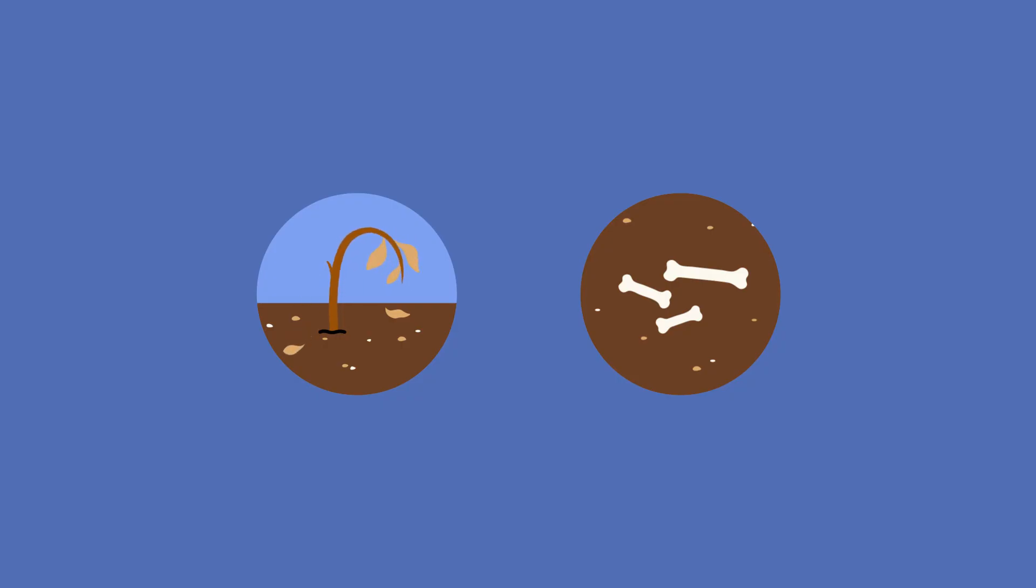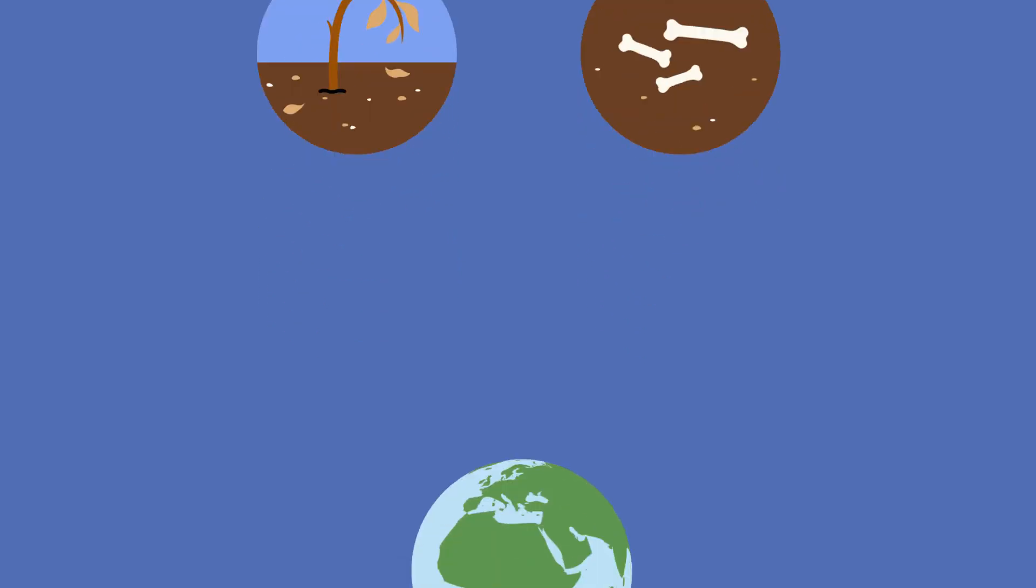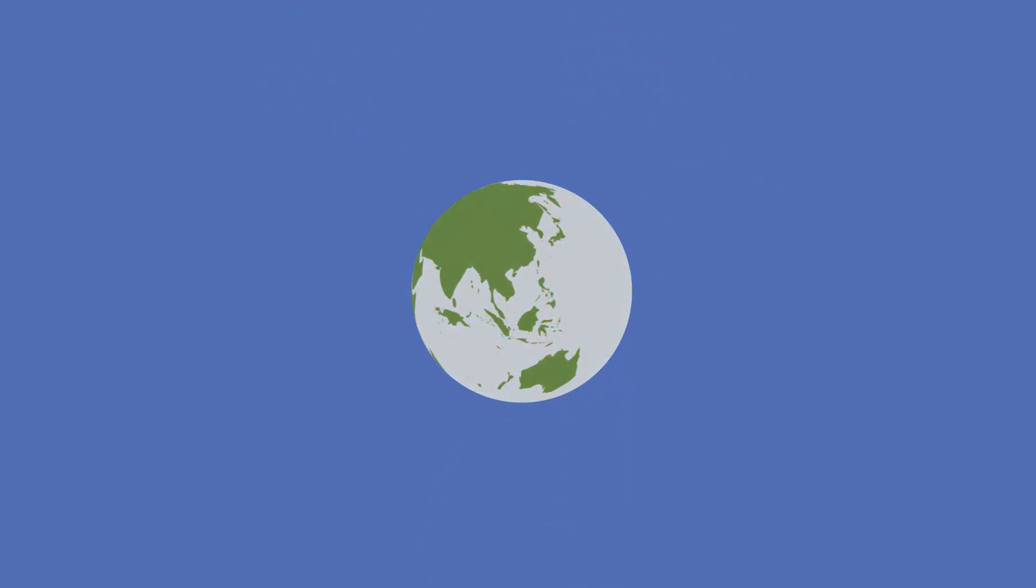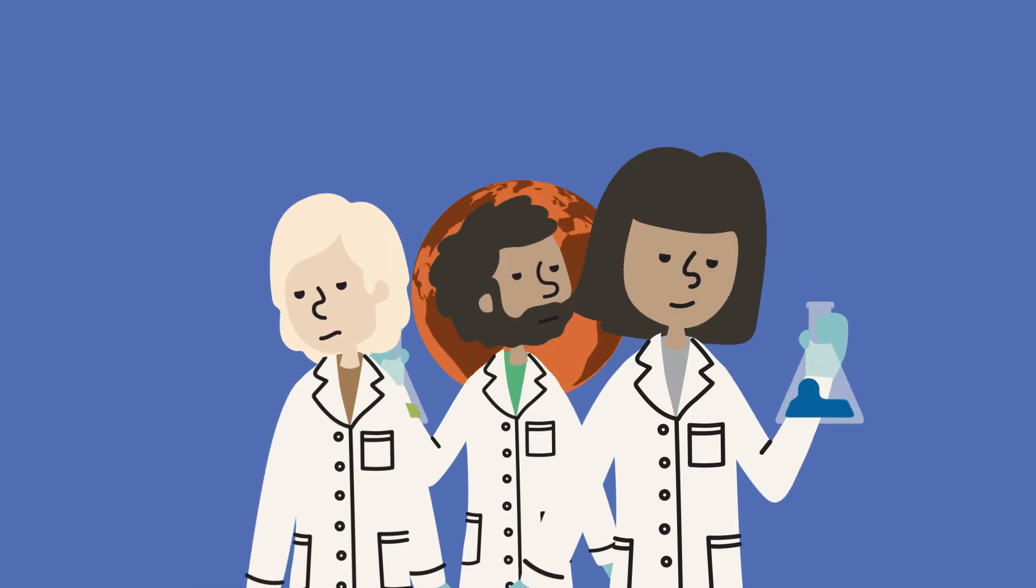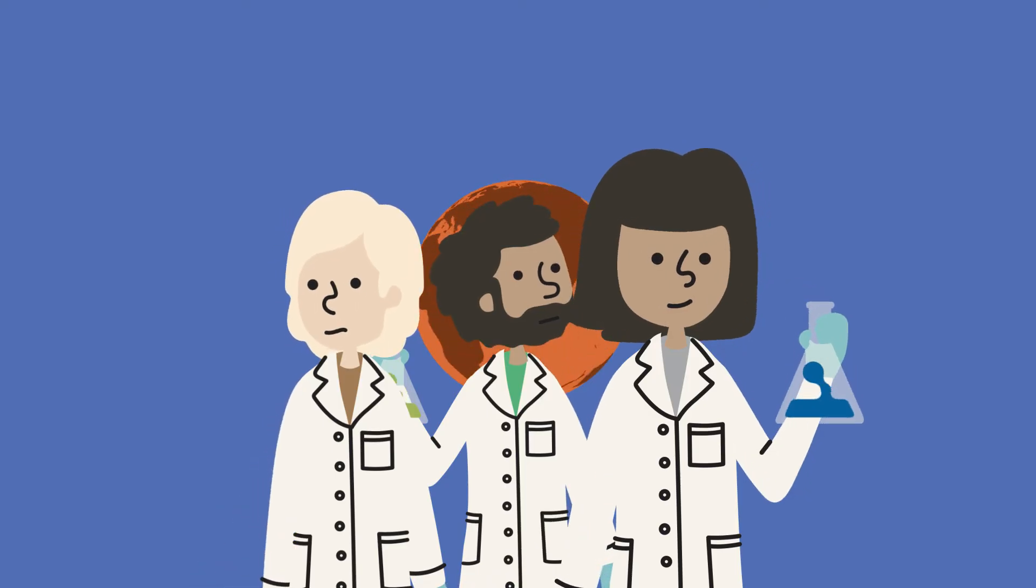What will this loss in diversity mean for the Earth? Climate change is happening whether we like it or not. Many scientists believe it is impossible for us to undo the damage.